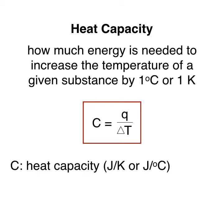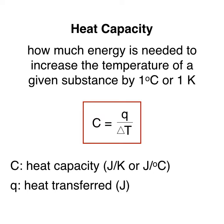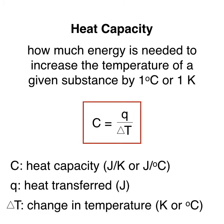In this equation, C is the heat capacity of the substance and has the units joules per Kelvin or joules per degree Celsius. Q is the amount of heat transferred, measured in joules. And lastly, delta T is the change in temperature, in Kelvin or degrees Celsius.